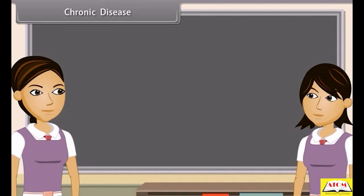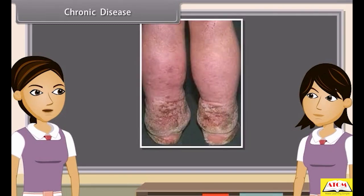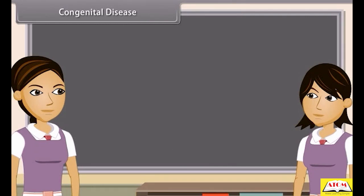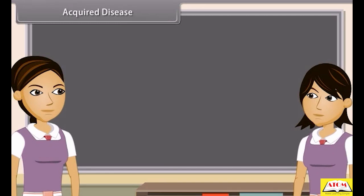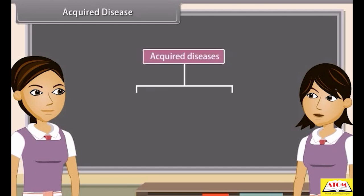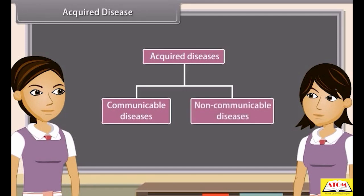Chronic diseases are those whose symptoms last for months or years. Example: elephantiasis, tuberculosis, etc. Congenital diseases are those which are present since birth. Example: albinism, haemophilia. Acquired diseases occur only after birth and hence they are non-inherited. But acquired diseases are of two types: communicable diseases and non-communicable diseases. Example: influenza.